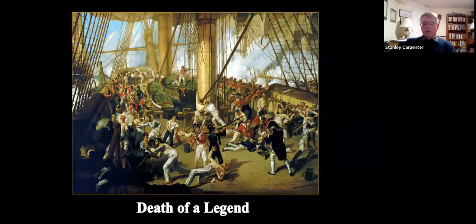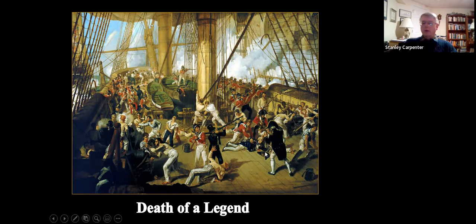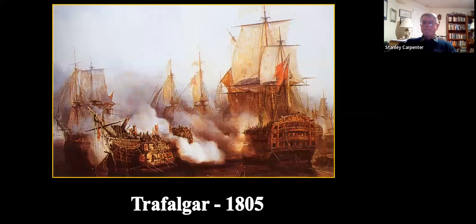Unfortunately for Nelson, he didn't survive the battle. He was on the quarterdeck of HMS Victory when a French Marine in the fighting top shot him; the bullet entered his shoulder and broke his spine. If you're ever in London, his uniform at the National Maritime Museum at Greenwich — the one he was killed in — is on display. Trafalgar, 1805. It's an example of what might be called heroic art — how public impression was made before photography, depicting events in dramatic paintings.